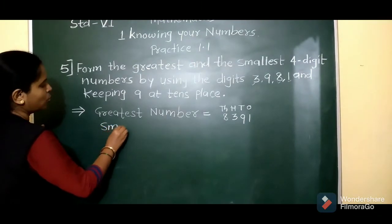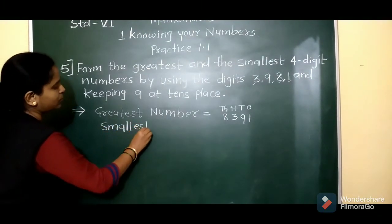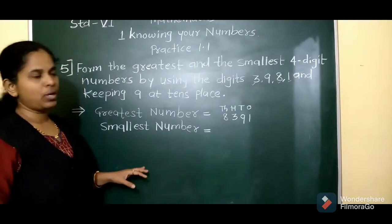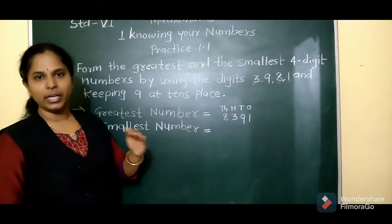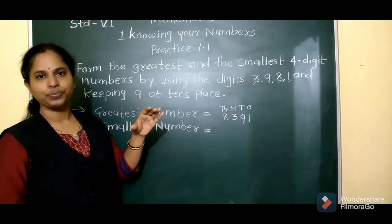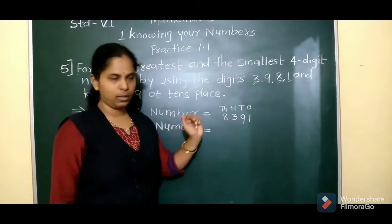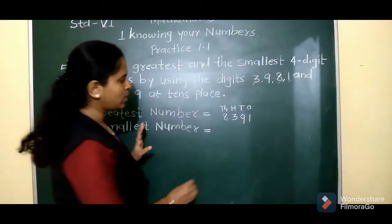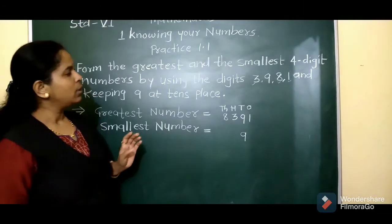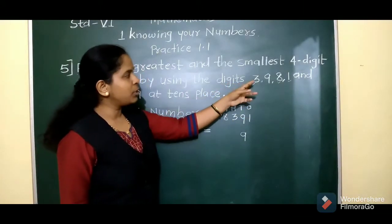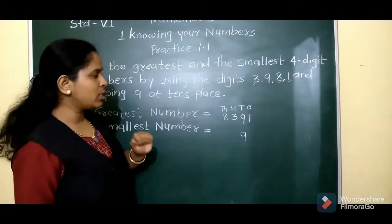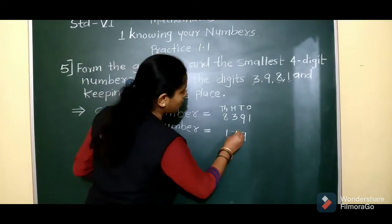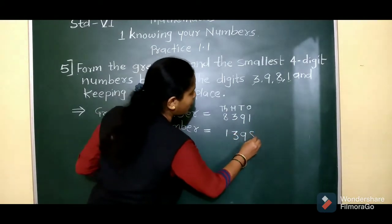Next, we make the smallest number. For the smallest number, we arrange digits in ascending order — from smaller to bigger. Again, 9 is kept at the tens place. The remaining digits are 3, 8, and 1. The smallest is 1, which goes at the thousands place. Then 3 at the hundreds place, and 8 at the ones place. So the smallest number is 1,398.